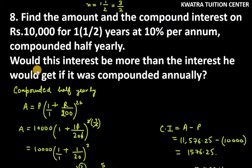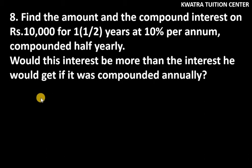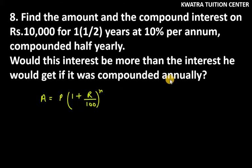So the first part is complete. Now they've asked: would this interest be more than the interest he would get if it was compounded annually? So we have to do the same thing for compounded annually and check which case gives more interest.